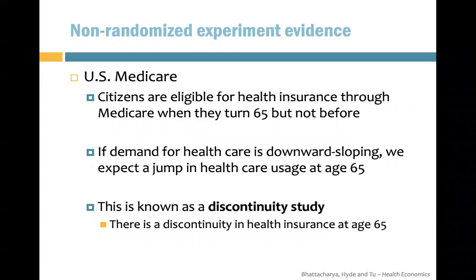We also have some evidence from non-randomized experiments. Although non-randomized evidence can be biased, there is a situation where it can be useful and less biased — what we call a discontinuity study. In the United States, citizens are eligible for health insurance through Medicare when they turn 65, but not before.